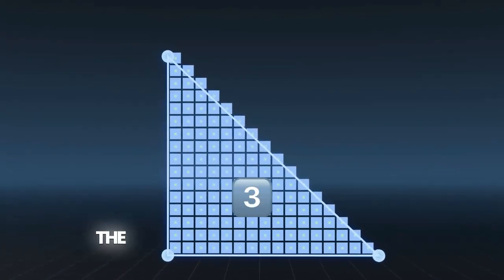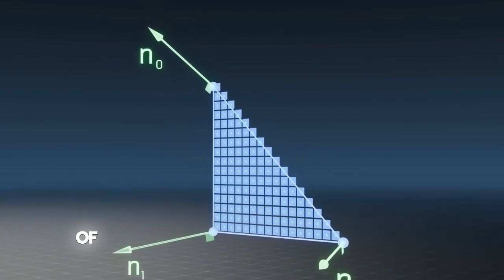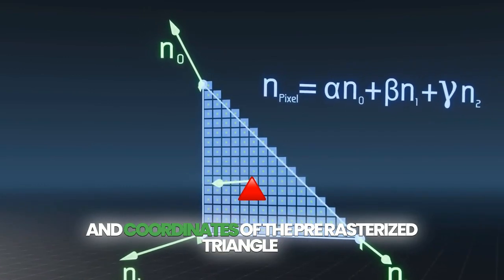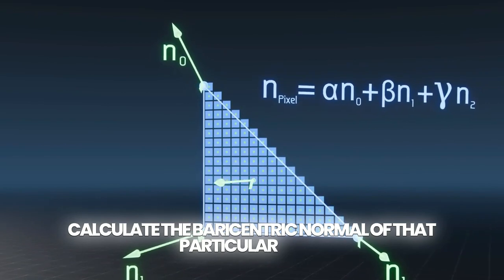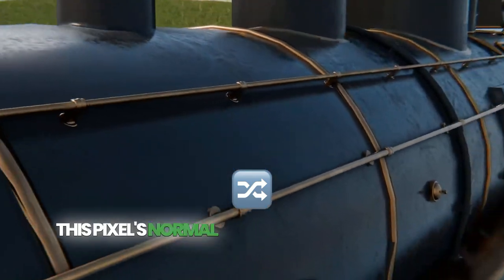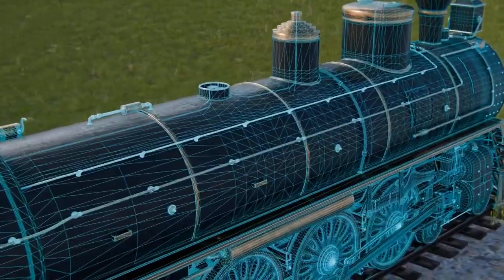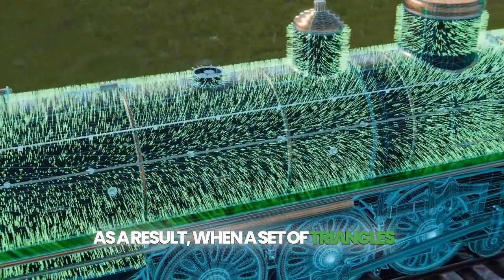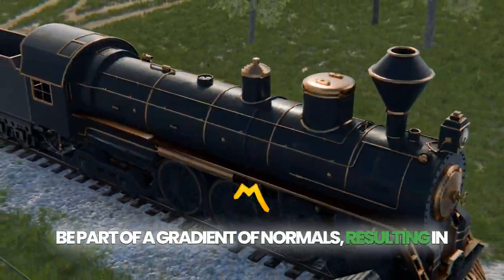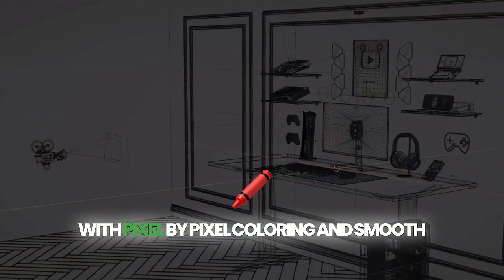For a given fragment, we take the center of each pixel and use the vertex normals and coordinates of the pre-rasterized triangle to calculate the barycentric normal of that particular pixel. Just like mixing three colors across a triangle, this pixel's normal will be a proportional mix of the three vertex normals of the triangle. As a result, when a set of triangles is used to form a curved surface, each pixel will be part of a gradient of normals resulting in a gradient of angles facing the light, with pixel-by-pixel coloring and smooth shading across the surface.